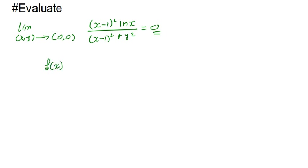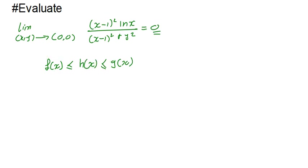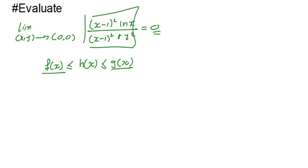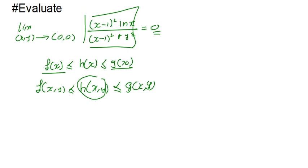In the multivariable case, we write f(x, y) ≤ h(x, y) ≤ g(x, y). Our complicated function h(x, y) is the one given. I'll construct simpler bounding functions f and g from it. I'll rewrite the expression as [(x−1)²/((x−1)²+y²)] · ln(x).